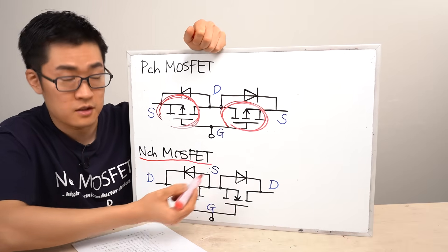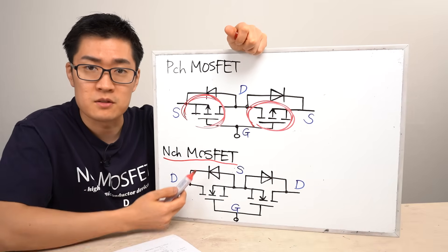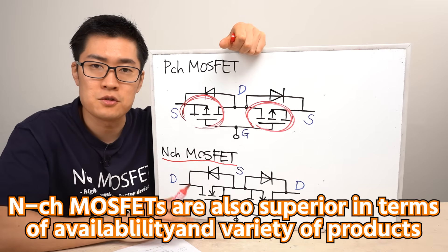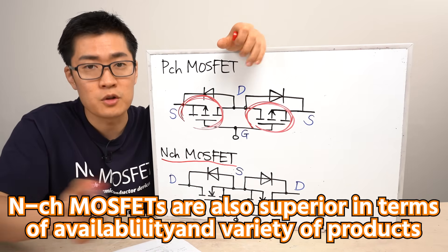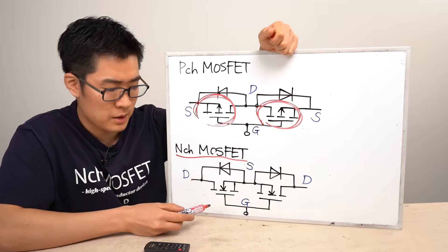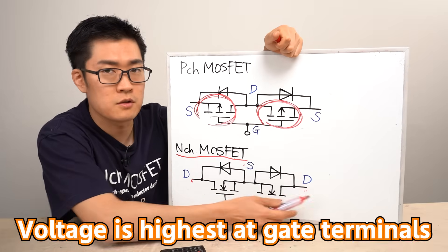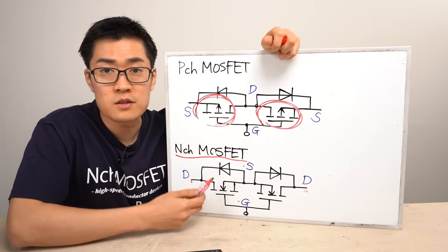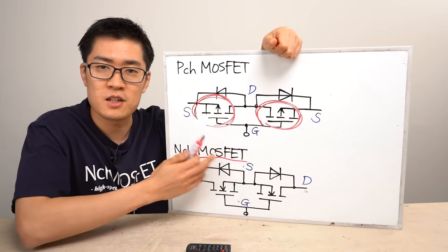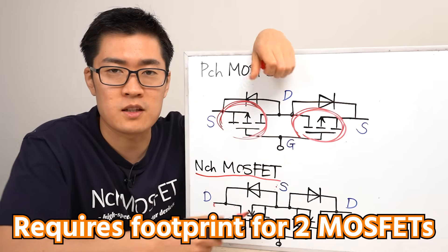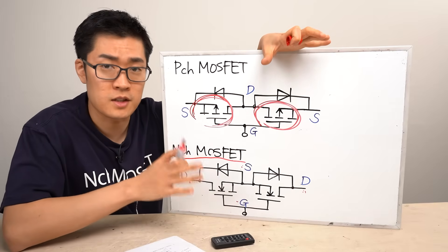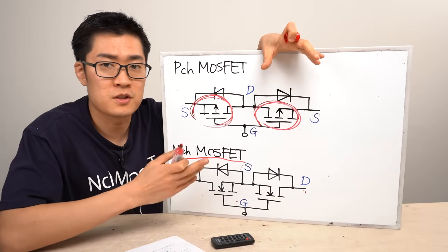N-channel MOSFETs offer superior overall performance compared to P-channel types — most notably lower on-resistance — and are much more widely available. However, a key drawback is the need for an additional power supply to drive the MOSFET, since the gate voltage must be higher than the circuit's own operating voltage. This can be resolved using a dedicated driver IC, but at the cost of increased component count and PCB area. Whether using P-channel or N-channel, two MOSFETs are normally required, which doubles the component footprint, making miniaturization more difficult.